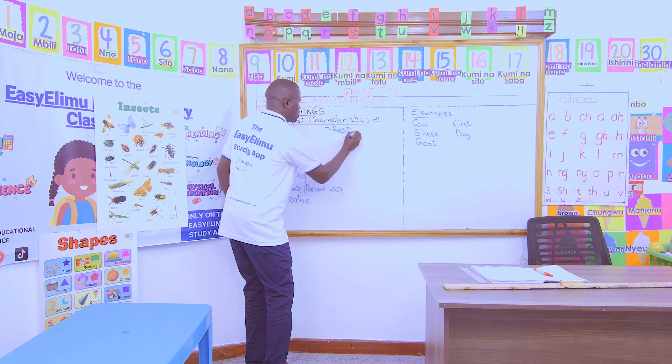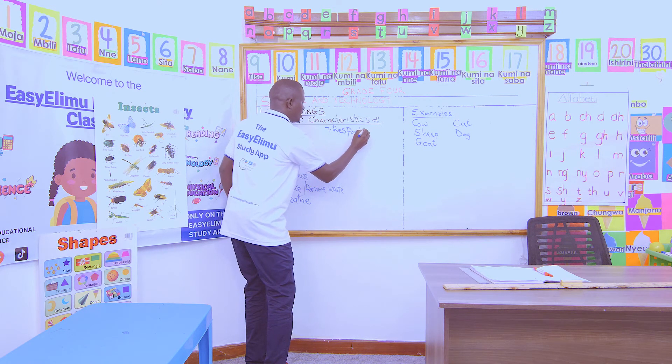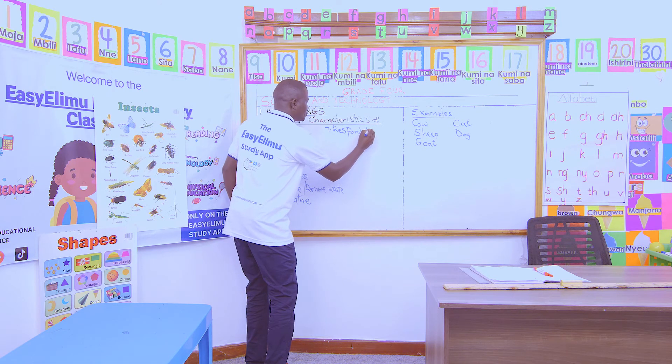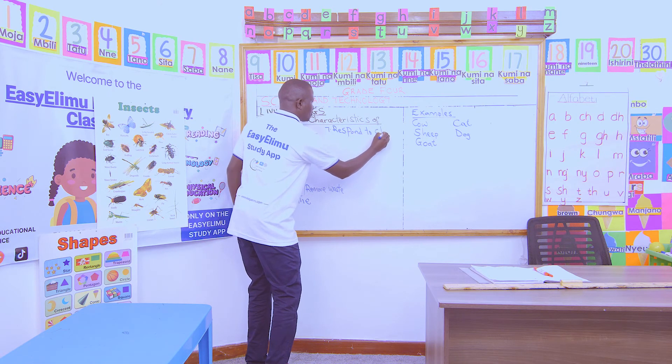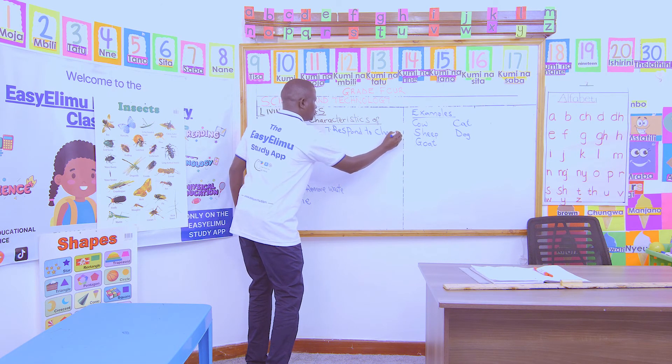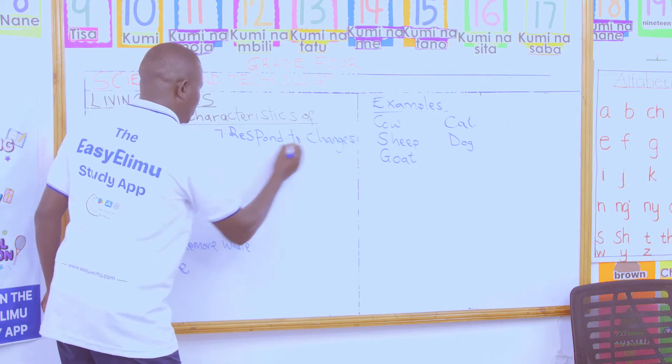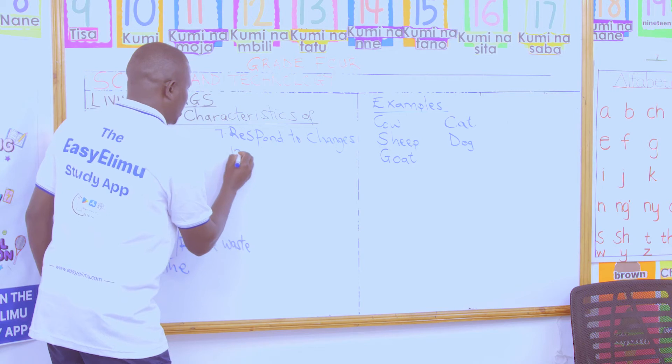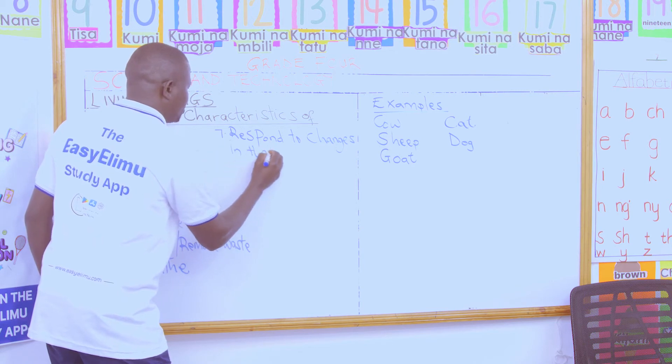The last characteristic, number seven: animals respond to changes in the environment. When an animal has been pricked, or you yourself have been pricked, you respond to the sensitivity on your skin — you respond to changes in the environment.